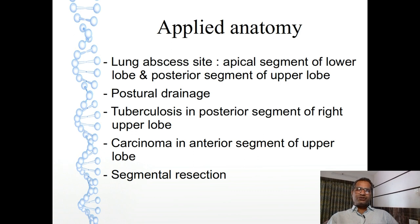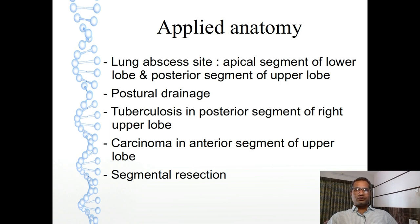Tuberculosis is common in the posterior segment of the right upper lobe - meaning in right lung, tuberculosis is common in the posterior segment of the right upper lobe. Carcinoma is common in the anterior segment of the upper lobe. In between bronchopulmonary segments there are areolar septa which act as a barrier for spread of infection, but this is not always true - in case of carcinoma and tuberculosis this barrier is not effective, therefore tuberculosis and carcinoma can spread easily from one bronchopulmonary segment to another.